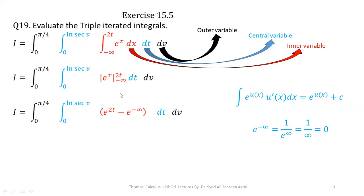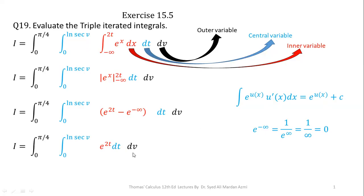In the next step, we apply the limits — upper limit minus lower limit. The answer of e raised to power minus infinity is 0, as we calculated. So we are left with e raised to power 2t. This completes the process of integration with respect to the most inner variable.